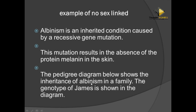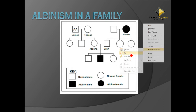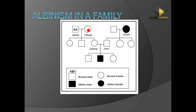Let's look at an example: the pedigree below shows the inheritance of albinism in a family, and the genotype of individuals is shown in the diagram. You need to identify which is a male and which is a female. A box means a male and a circle means a female. If the box or circle is shaded, it means that individual is affected by the disease being discussed.